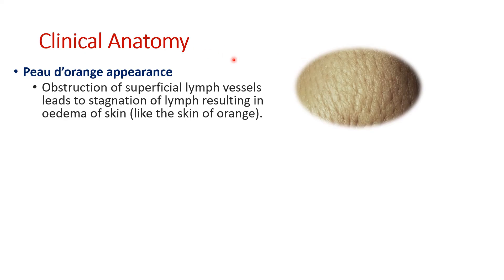Coming to clinical anatomy, there are clinical conditions that occur because of cancer or carcinoma of the breast. The first is the peau d'orange appearance — the skin covering the breast looks like the peel of an orange. This happens because of obstruction of the superficial lymph vessels by malignant cells, leading to stagnation of lymph and edema. The extracellular fluid cannot be drained, resulting in raised areas adjacent to depressed areas, making the skin look like orange peel.